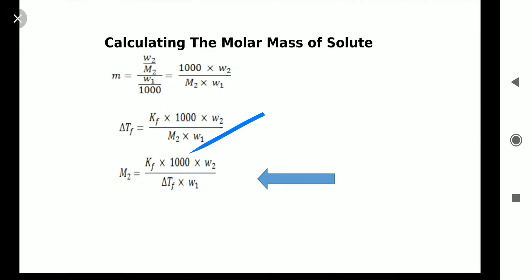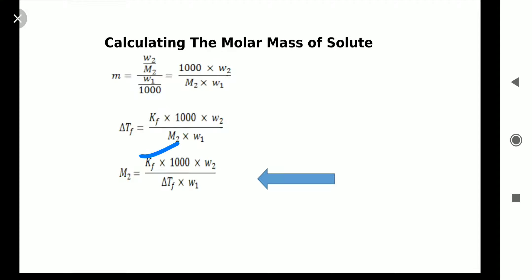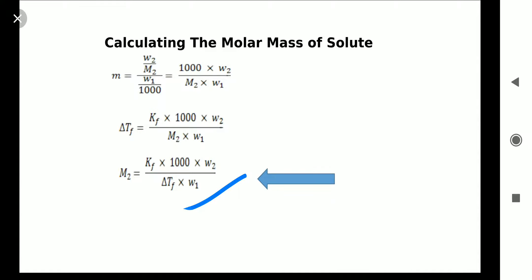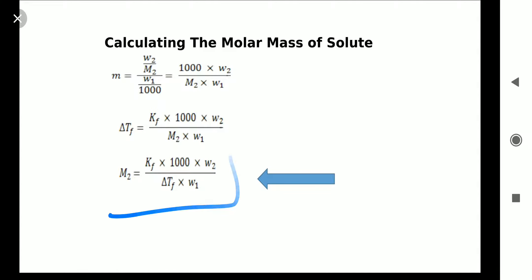Rearranging for M2, the final equation is: M2 equals Kf into 1000 into W2 upon delta Tf into W1. Here, M2 is the molar mass of solute, Kf is the freezing point depression constant, W2 is mass of solute in grams, W1 is mass of solvent in grams, and delta Tf is the depression in freezing point. Using this equation, we can find the molar mass of solute, or any other unknown quantity.